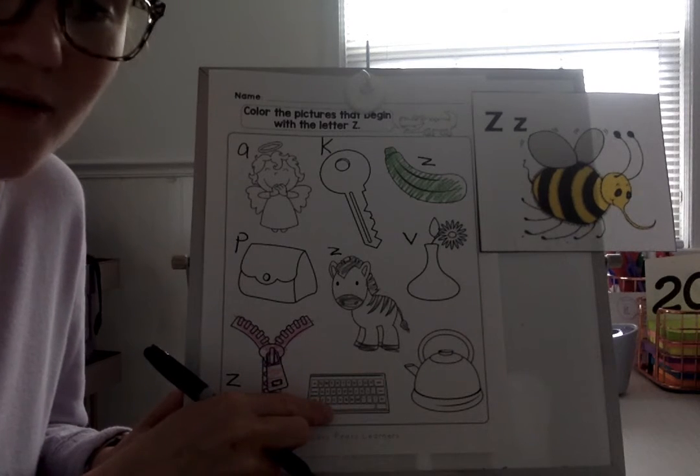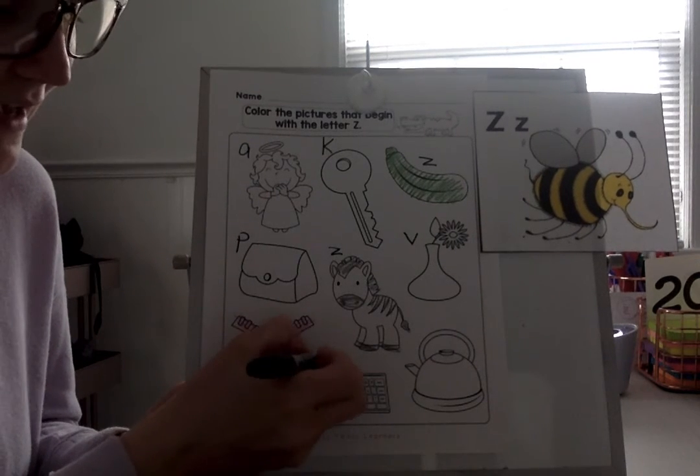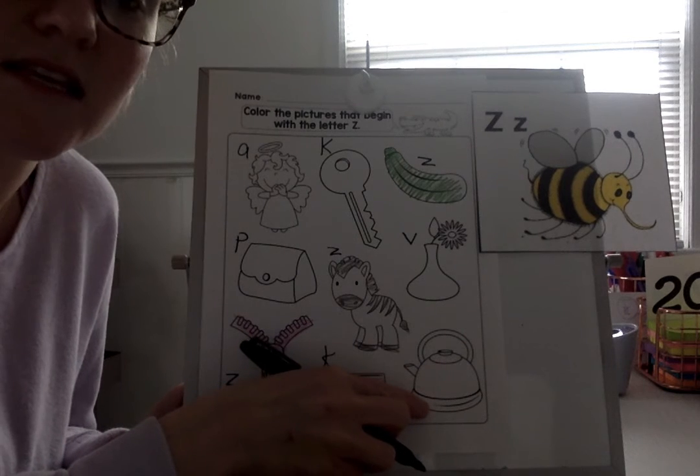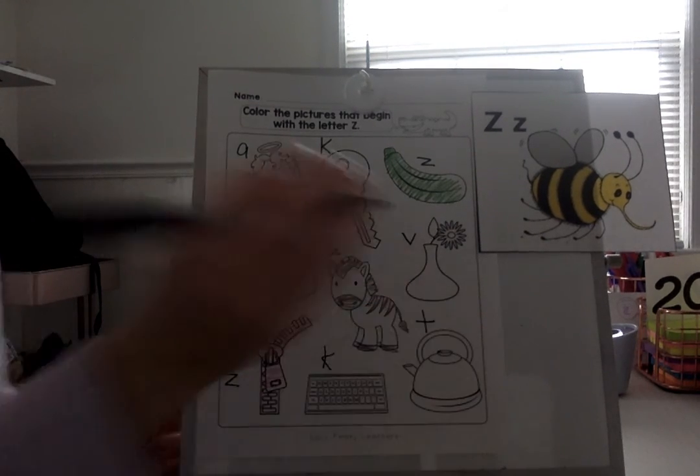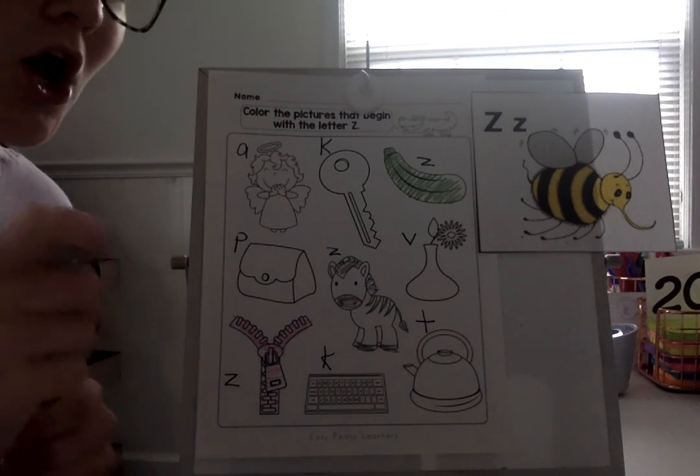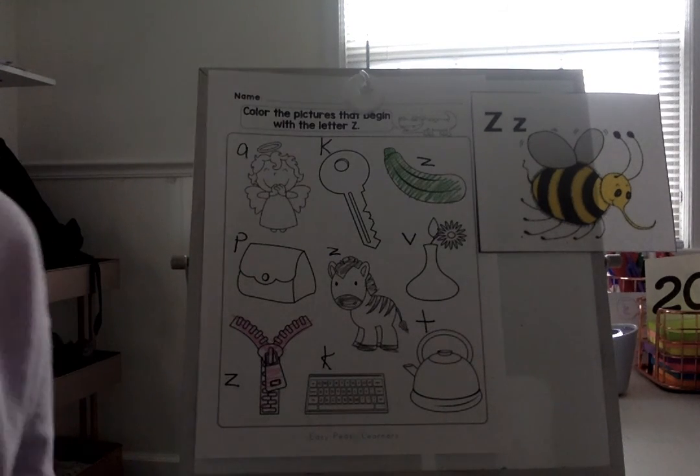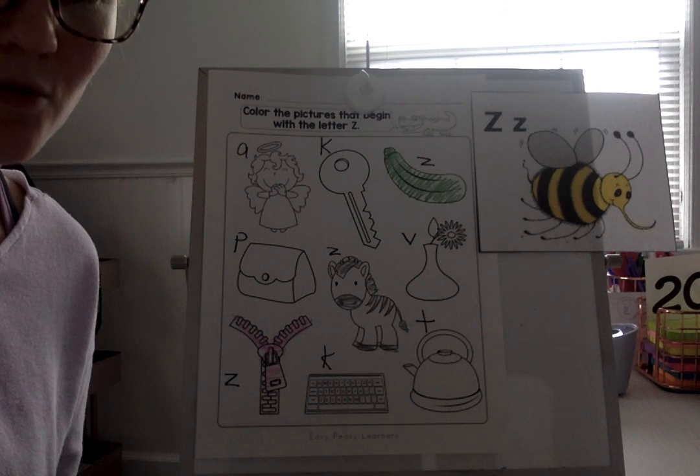What about keyboard? K again. Good. And then T-T-T-teapot. T-T-T-teapot. T. Good. Or you could say it's a kettle and then K-K-K. K again. All right. Great job with our letter Z. Next week, we're moving on to a new letter.